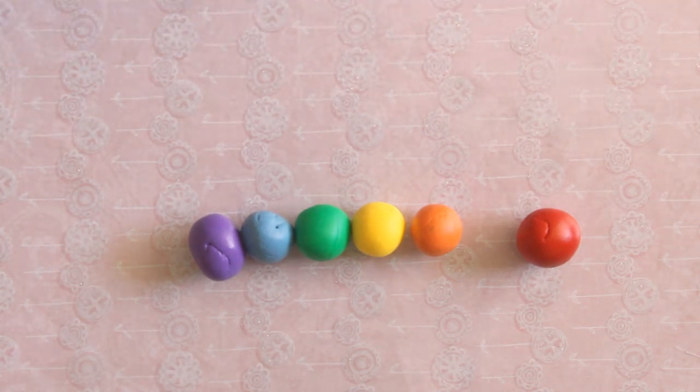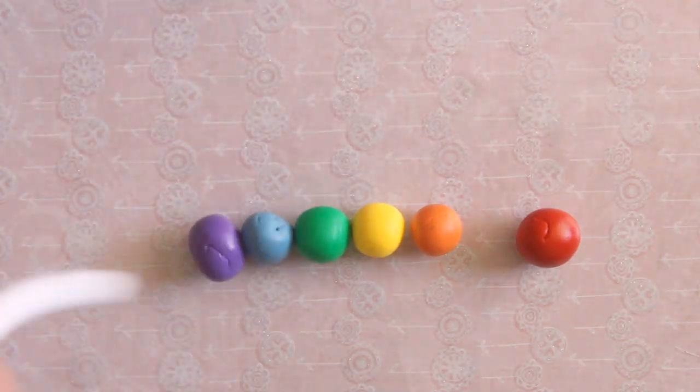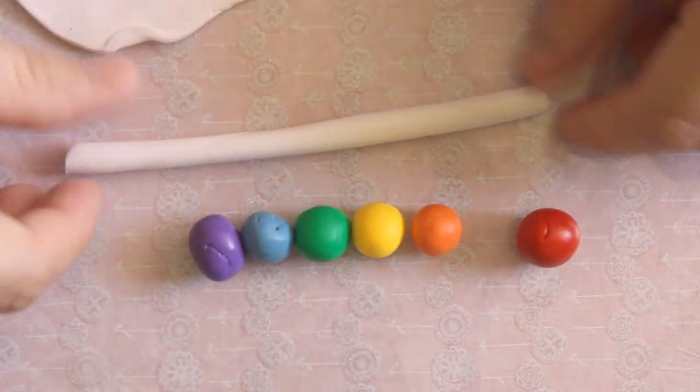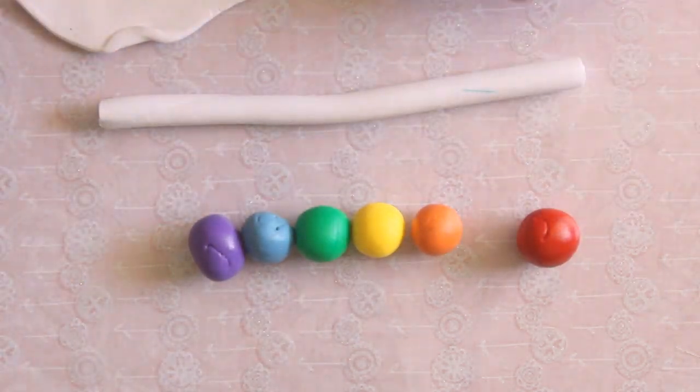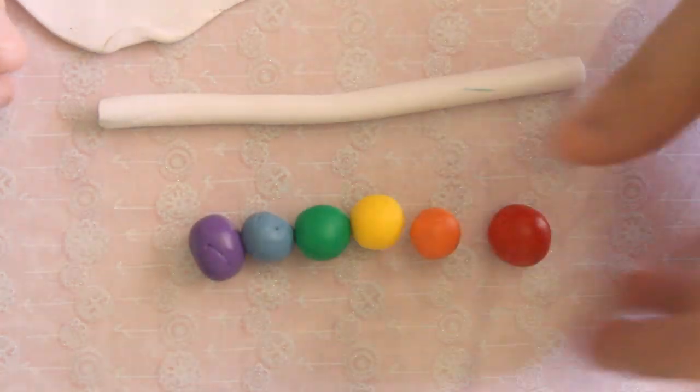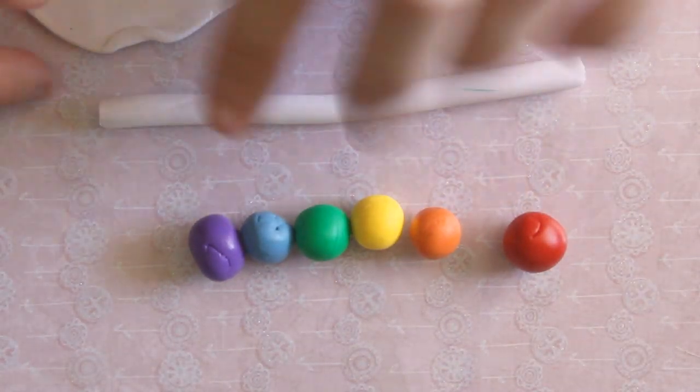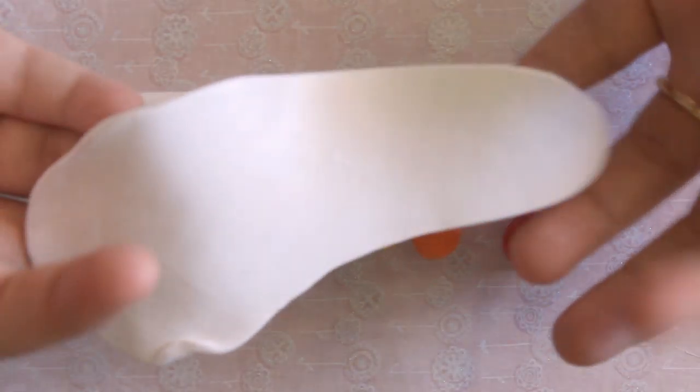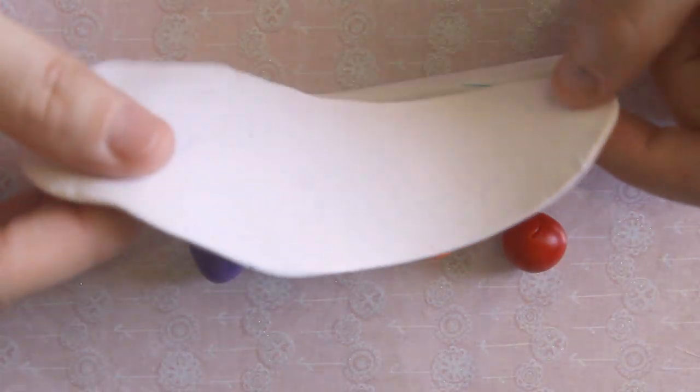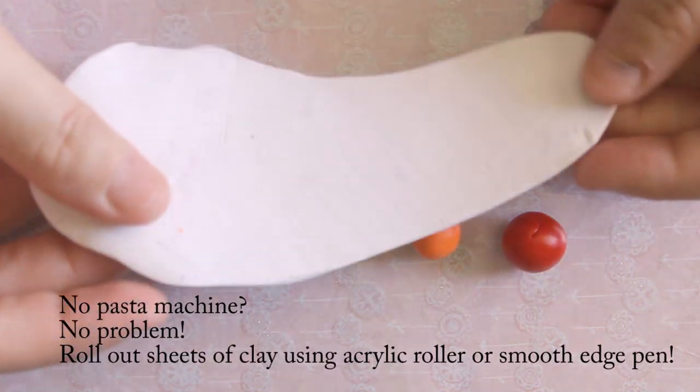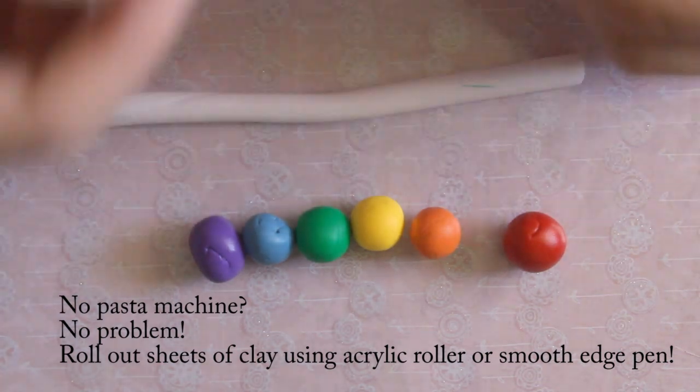You're also going to need some white and you're going to roll the white out until it is a log. Then what you're going to do is get your rainbow colors and make them into sheets. I'm using a pasta rolling machine because it makes the job a lot easier and more accurate. So roll those all out.